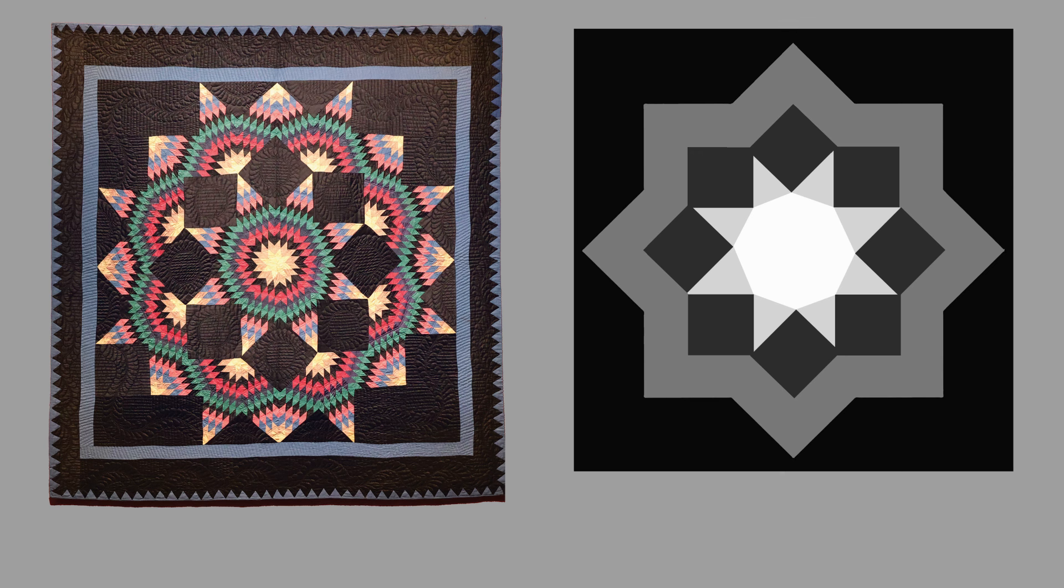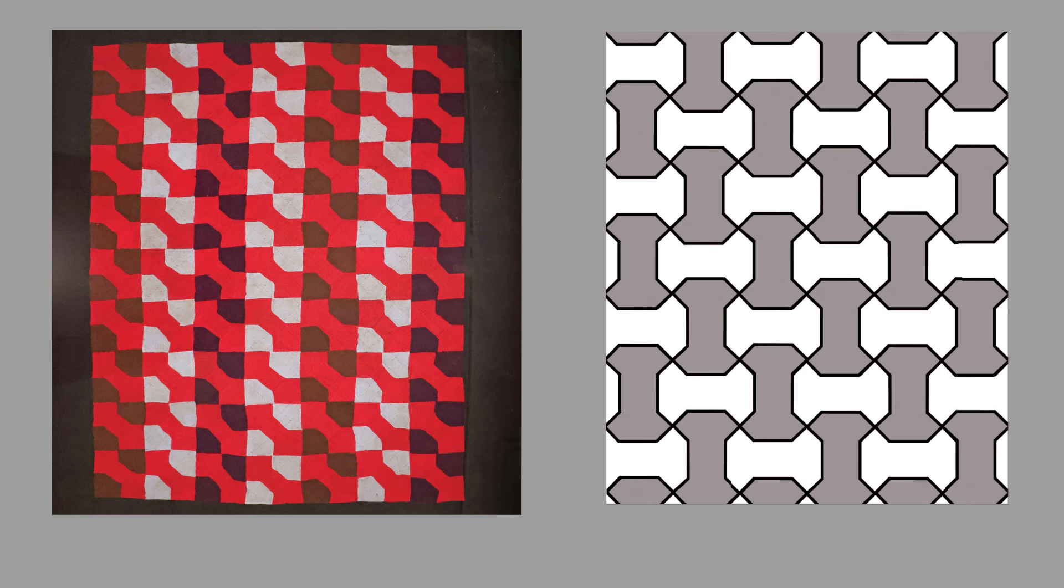These are simultaneous or parallel discoveries in two different parts of the world, two very different cultures. And one more slide shows the Amish quilt on the left that shows a kind of diagonal shape. And if you look closely, you'll notice that it is very reminiscent of a very traditional Islamic pattern known as the bone tessellation.